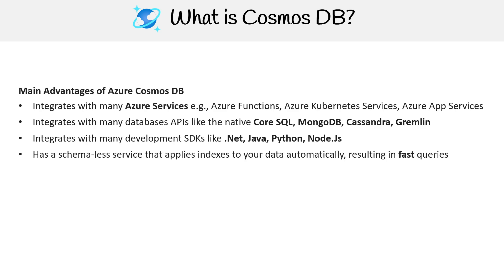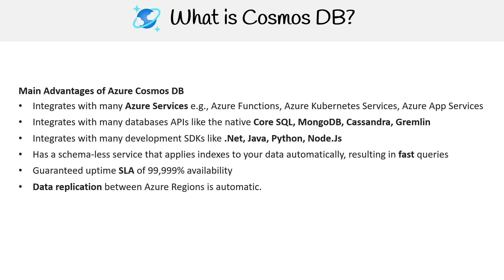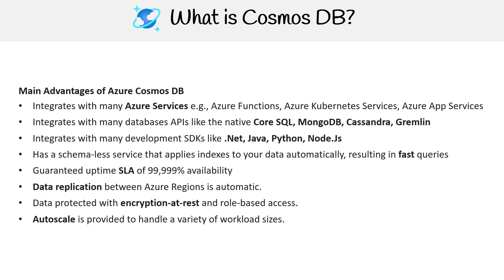It has a schema-less service that applies indexes to your data automatically, resulting in fast queries. You get a guarantee of 99.999% — three nines of availability. There's automatic data replication between Azure regions, data protected with encryption at rest and role-based access controls (RBAC). It auto-scales and provides a way to handle a variety of different workload sizes. You can see there are a lot of advantages to using Cosmos DB.